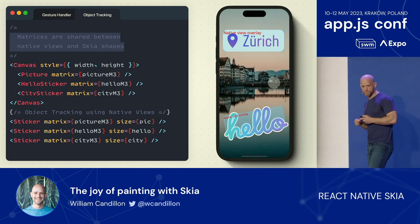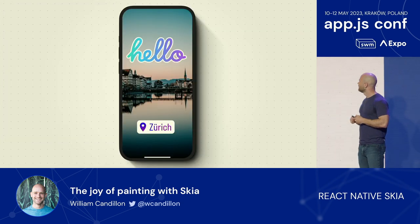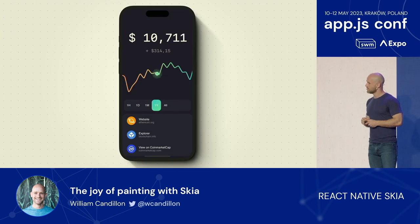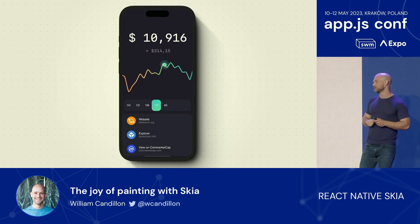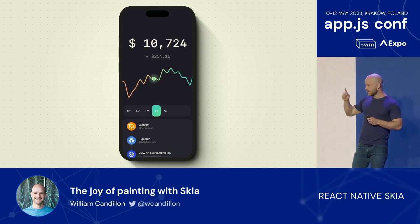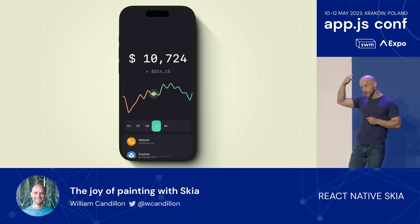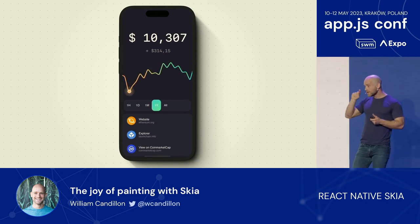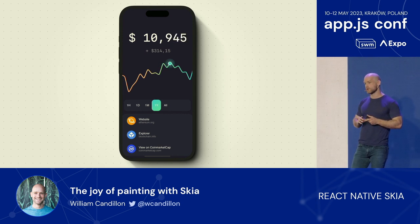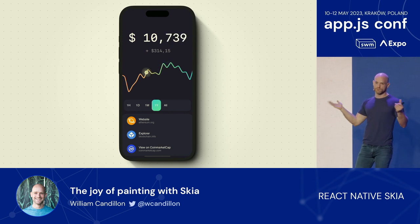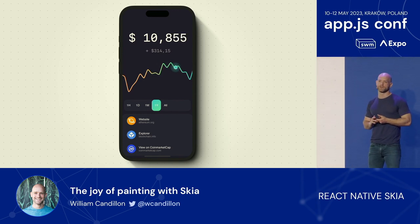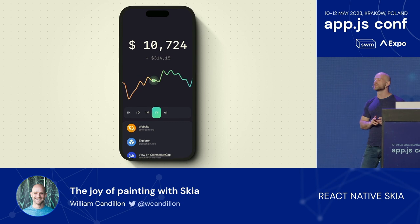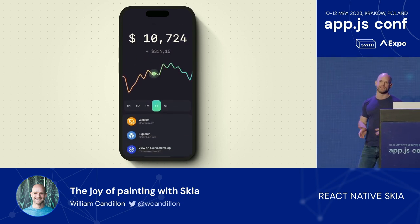Another compelling example of the GestureHandler integration is this graph. The whole graph is a Skia canvas, and we want to be able to scroll. If we touch the Skia canvas, we don't want the gesture to be active — we only want the gesture to be active if we touch the little cursor in the middle. This is what the new Reanimated integration is enabling us to do. Thank you, Christophe, and thank you Software Mansion for building these incredible modules with Reanimated and GestureHandler.